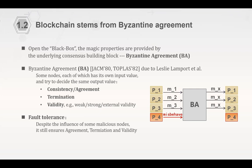Without validity, we could have trivial protocols — for example, just output zero immediately. That satisfies agreement and termination, but makes no sense. Validity captures this: the output must be useful. For example, with strong validity the output must be one of the input values m1, m2, or m3. And Byzantine agreement must tolerate faulty nodes — despite some malicious parties in the system, it still ensures agreement, termination, and validity.